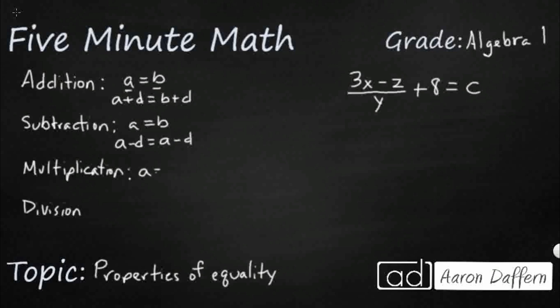So you probably know where this multiplication property of equality is going. So AD equals BD. You can multiply. And then the same thing with division. If A equals B, then A over D equals B over D. So these are the four properties of equality we've been using for several years now.